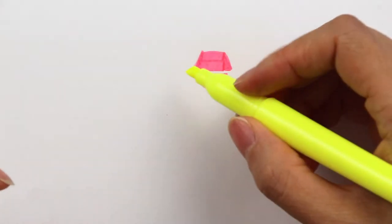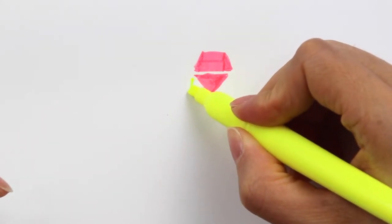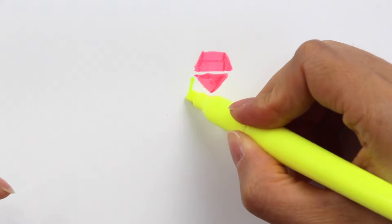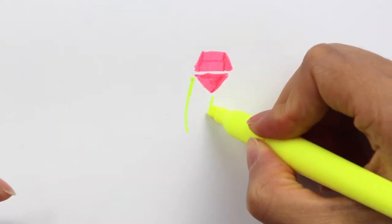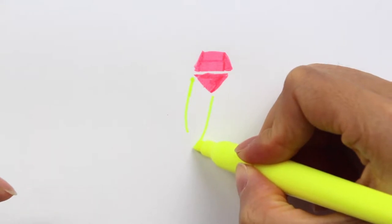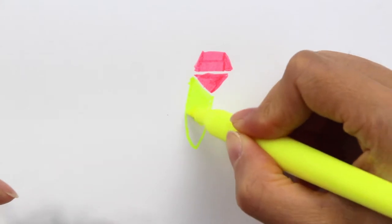Later we are going to use the gold highlighter to draw the wing. First draw a little curved line all the way down here, and then here draw a little curved line as well. Connect them and color the inside part. This will be the wing.